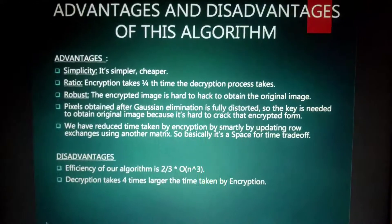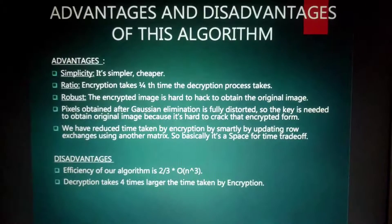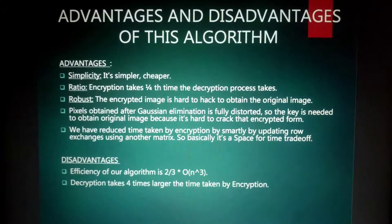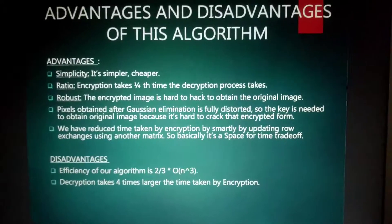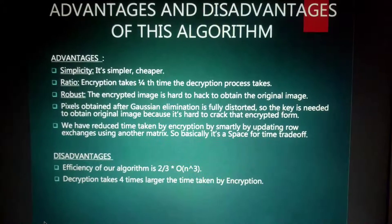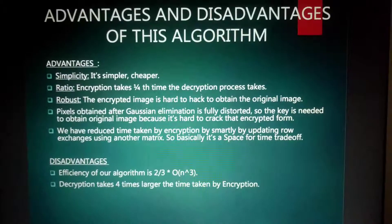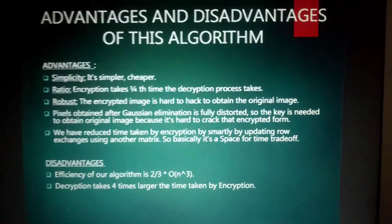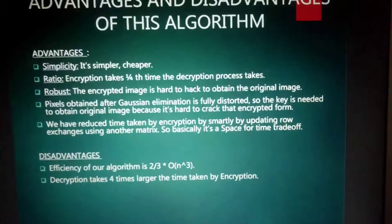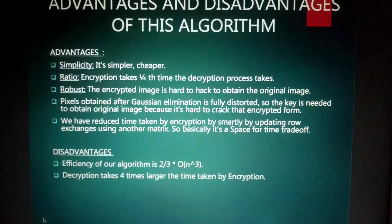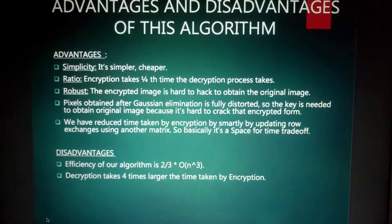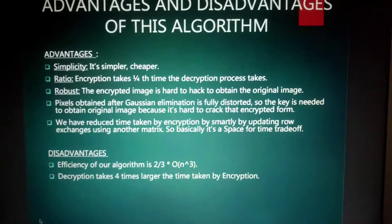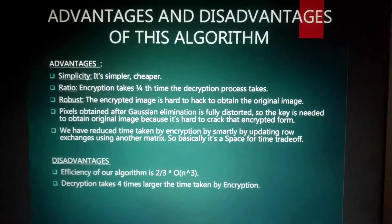The advantages of this algorithm are: it is simple and cheaper, encryption takes one-fourth of the time of decryption, and the encrypted image is hard to reverse. We achieved a reduced encryption time by smartly operating row exchanges using another matrix — essentially a space-for-time trade-off. The disadvantage is that the efficiency of the algorithm is O(2/3 * n³), which is high, and decryption takes four times longer than encryption — a significant disadvantage.